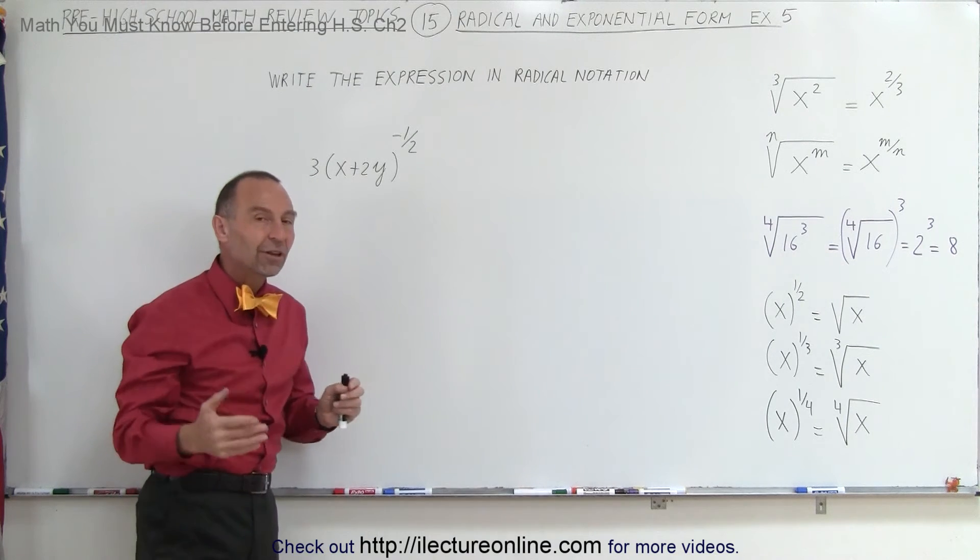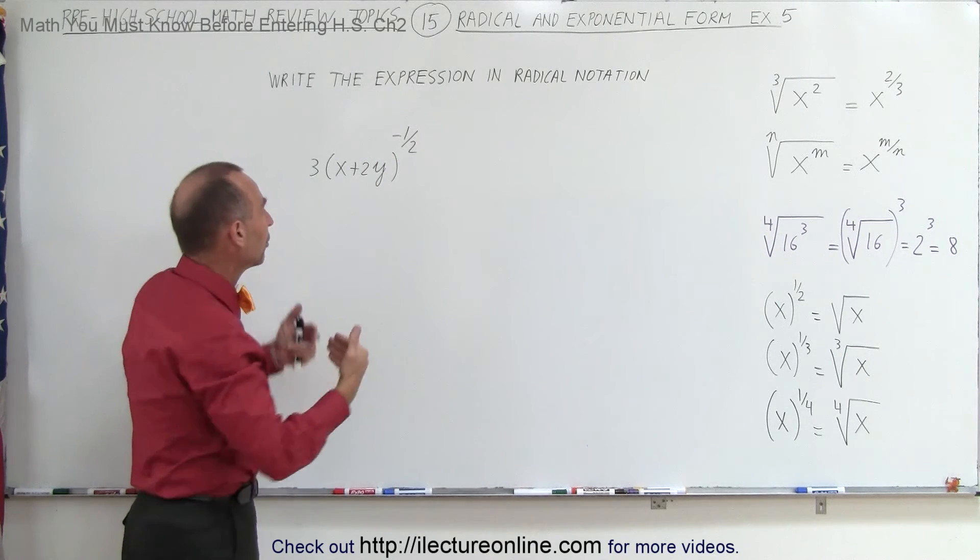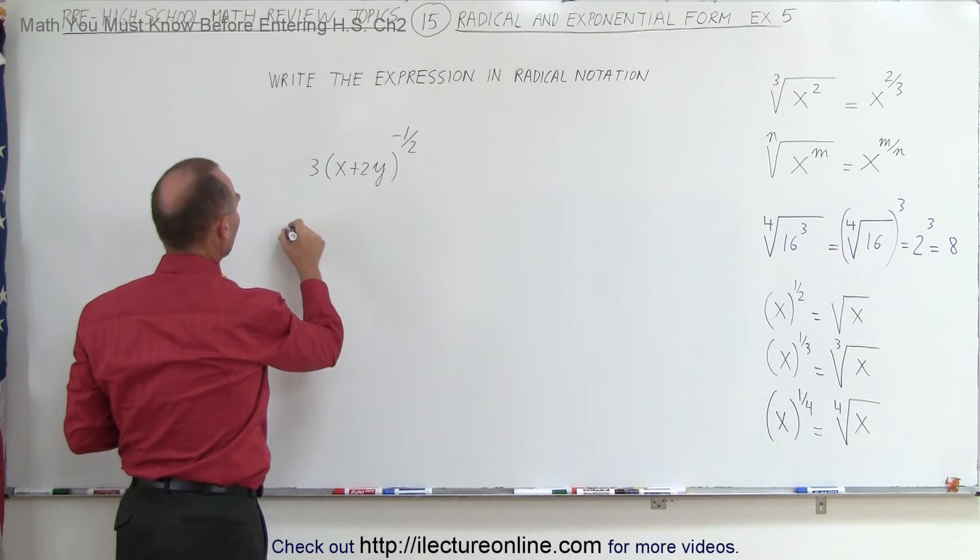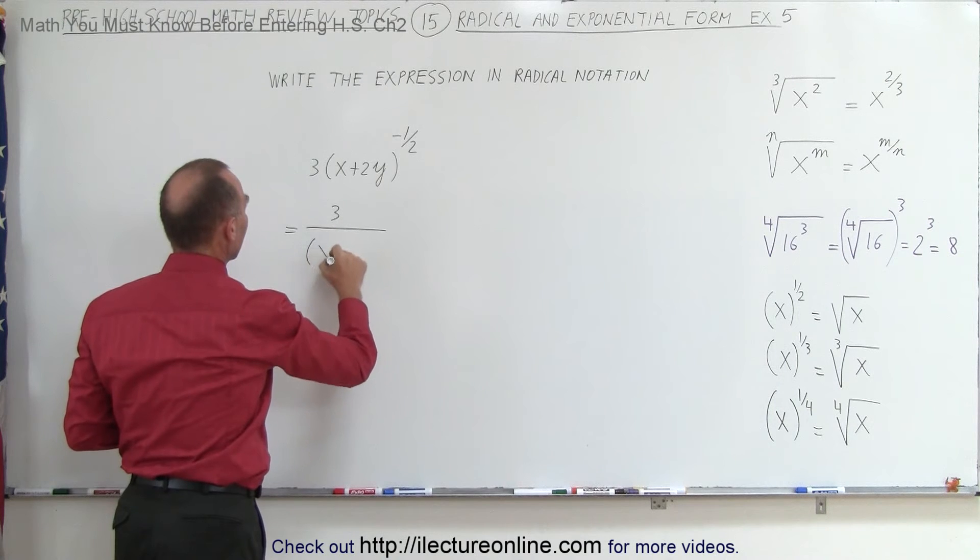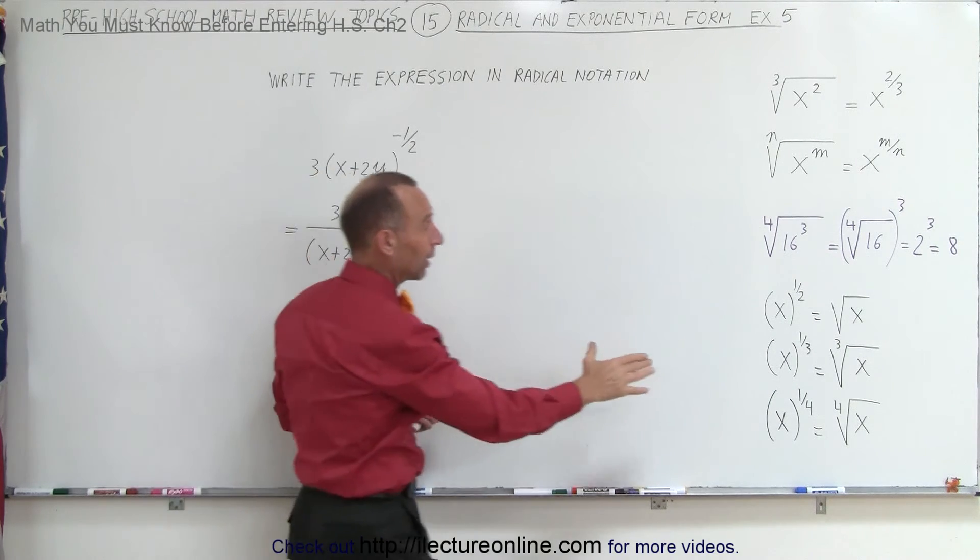From the previous set of videos, we realize that whenever we have a negative exponent, we can turn that into a positive exponent by moving this to the denominator. So we're going to rewrite this first as follows: this can be written as 3 divided by the quantity x plus 2y to the positive 1 half power. Now we're going to employ this rule right here.